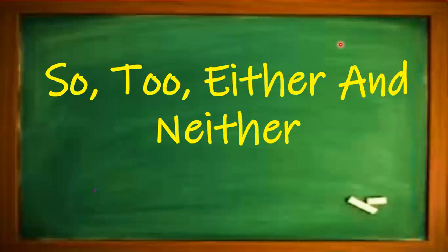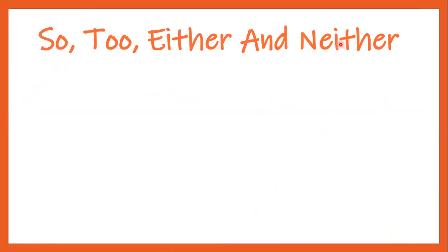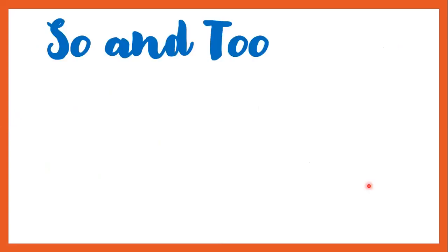So here we have: so, too, either, and neither. We use these to express similar opinions. So and too are used with positive sentences, while either and neither are used with negative sentences. The main difference between so and too is going to be the word order — it's going to be the same with either and neither. The difference between these two pairs is the word order.